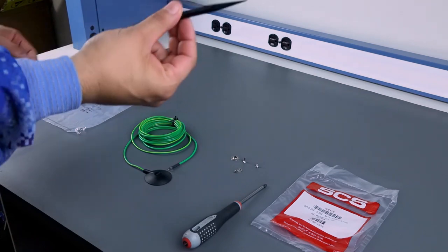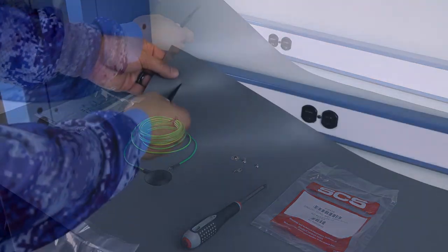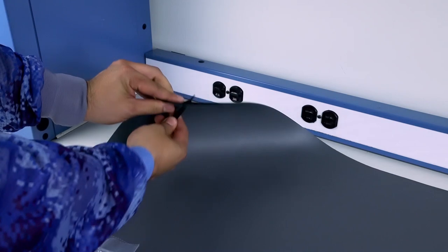As we begin the installation we're going to use a black probe and we're going to poke a hole into the mat.